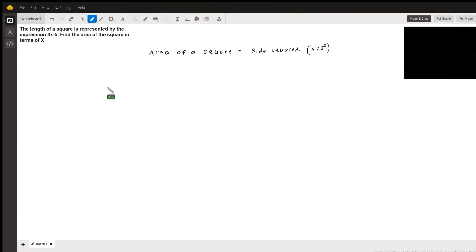The length of a square is represented by the expression 4x-5. Find the area of the square in terms of x. So in this problem, the two main concepts that will be covered is how to find the area of the square and how to multiply two binomials together.